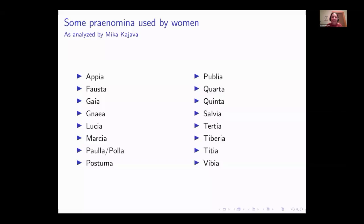But Mika Kajava gives examples of praenomina used by upper-class senatorial women. Here they are: Apia, Falsa, Gaia, Gnaea (abbreviated CN since G and CN are interchangeable), Lucia, Marcia, Paola, Postuma, Publia. There are a couple of numerical names: Cordae and Quinta. Also Salvia, Tertia, Tiberia, Titia, and Vibia.